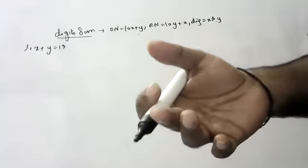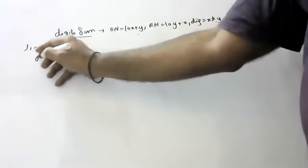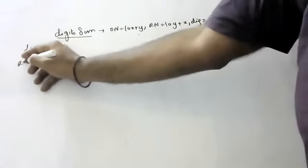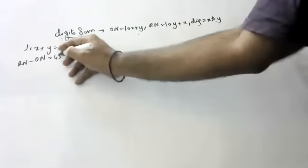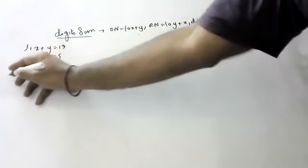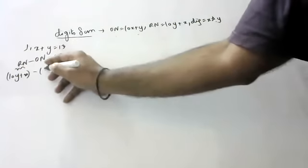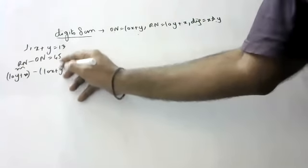If the original number is subtracted from the reversal number, the result is 45. What is the reversal number? 10Y plus X. What is the original number? 10X plus Y. So: 10Y plus X minus 10X minus Y is equal to 45.